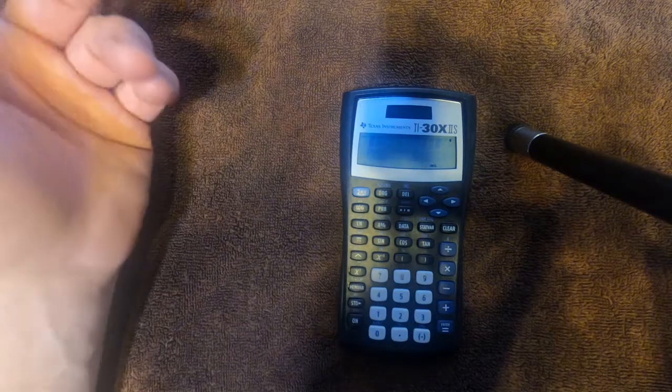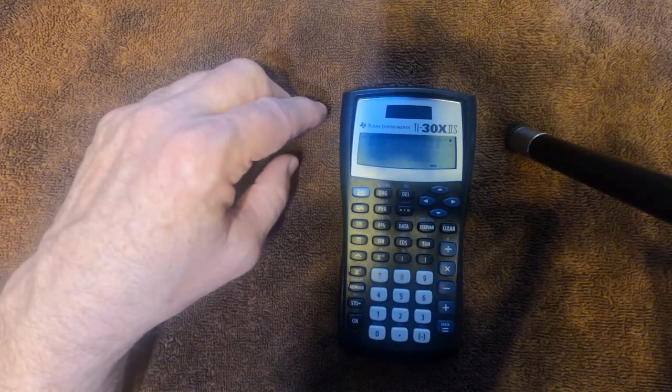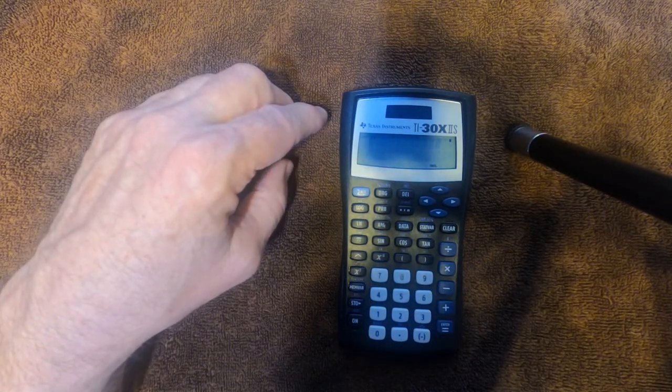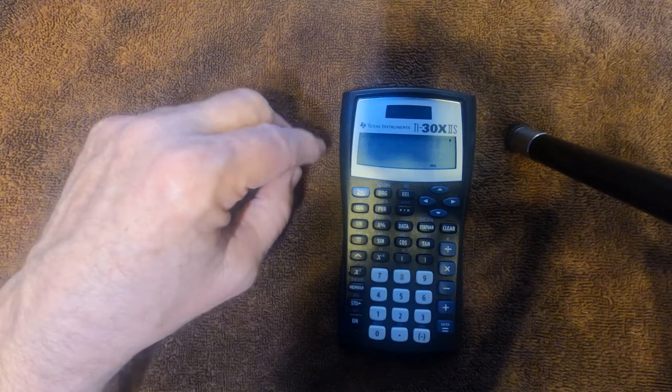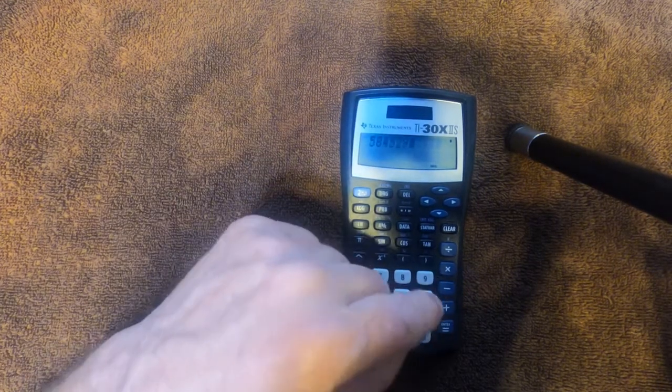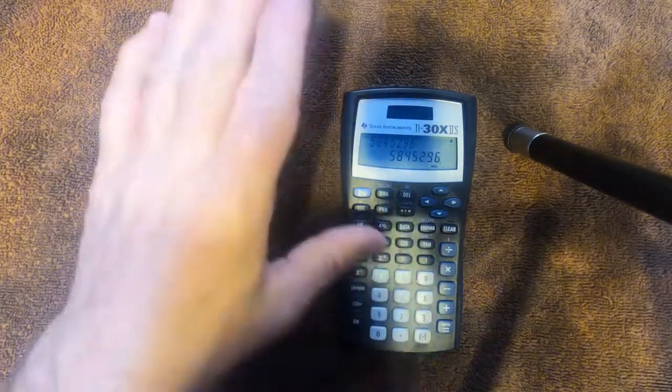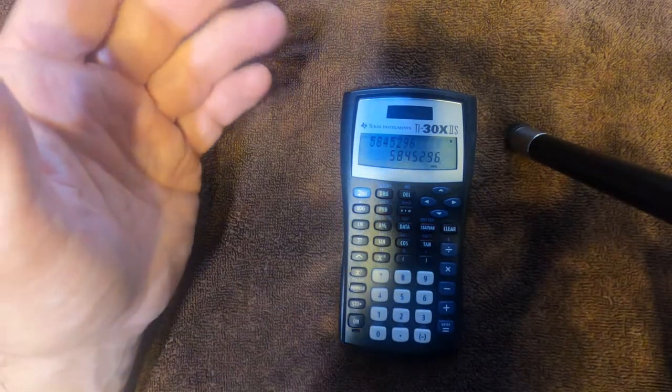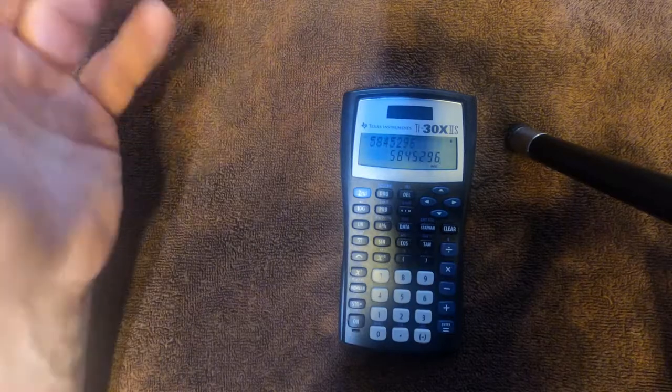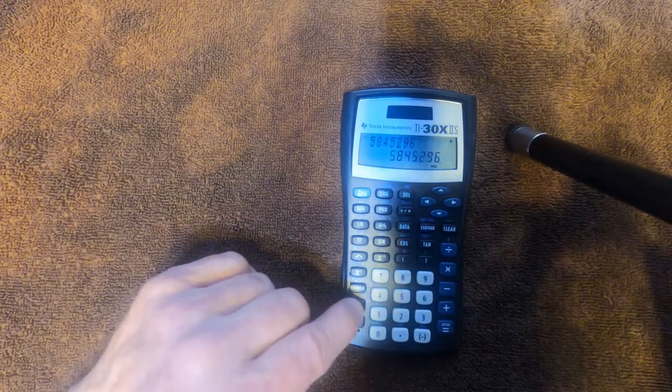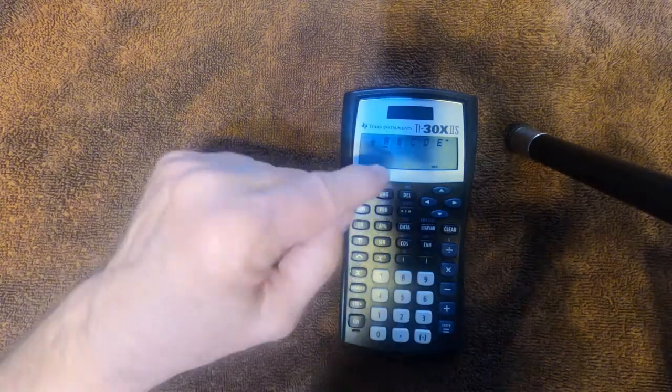Memory. A nice thing about this calculator is that it can store numbers in memory. So let's say we're doing a calculation and we want to use that number somewhere later. To store it, press STO for store, and then we can put it in A, B, C, D, or E.